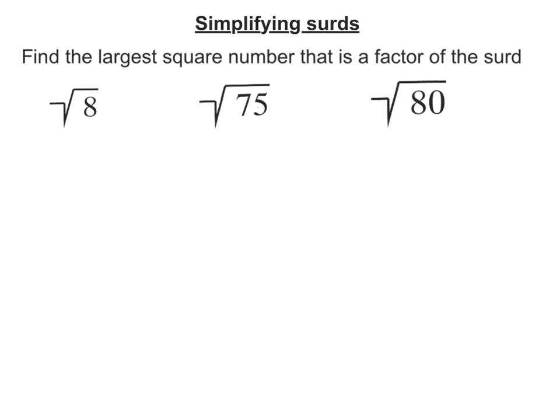The first one here we've got is root 8. Well the largest square number that goes into 8 is 4. So I can rewrite this as 4 times 2. Now what you need to know is that when you have one big square root with a multiplying inside, we can make that two square roots that multiply. And root 4 is 2. So this is 2 times root 2 or just 2 root 2.